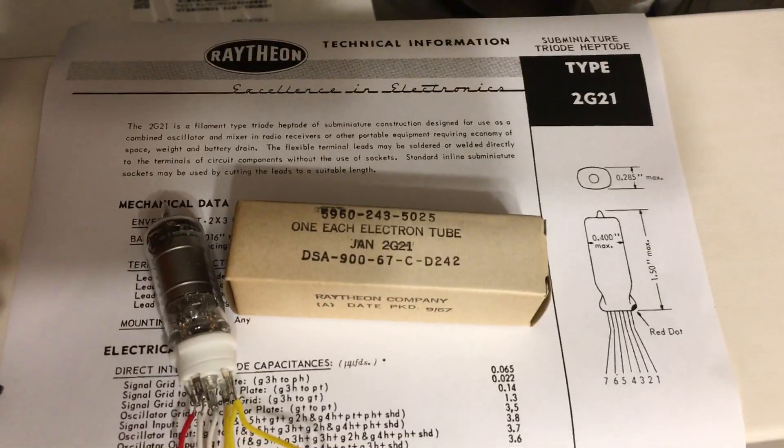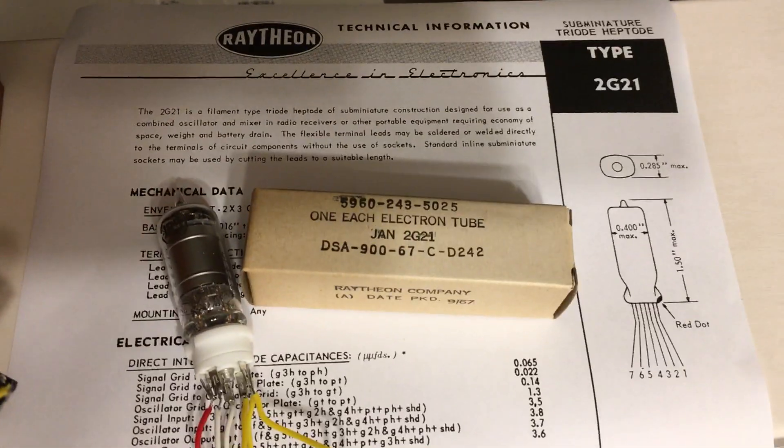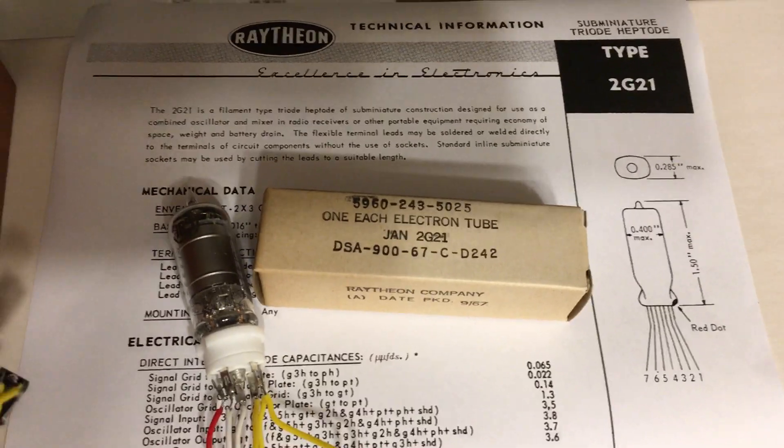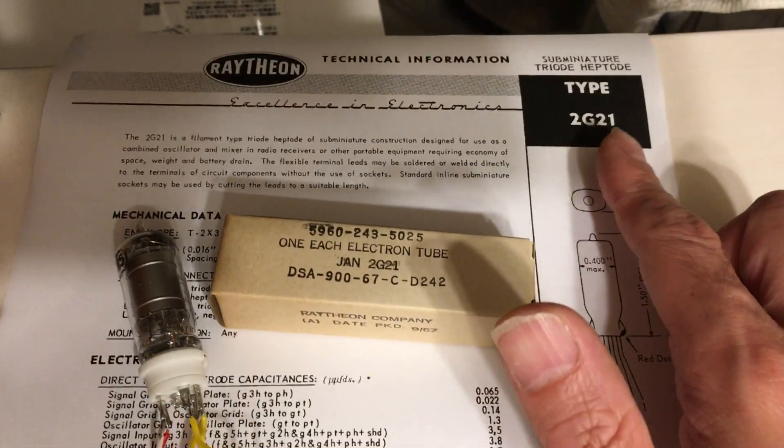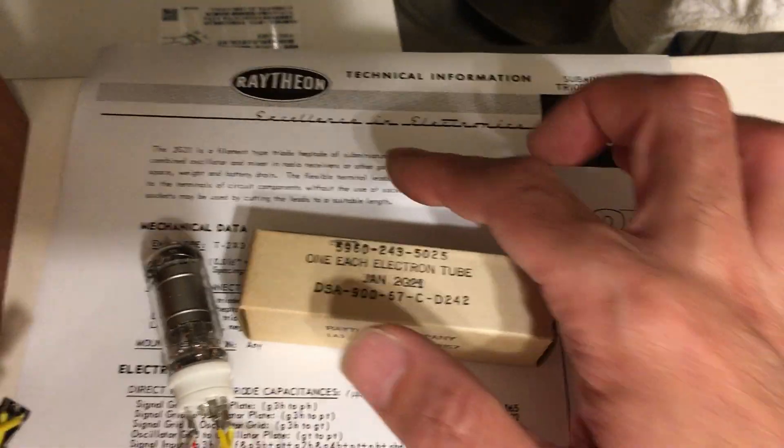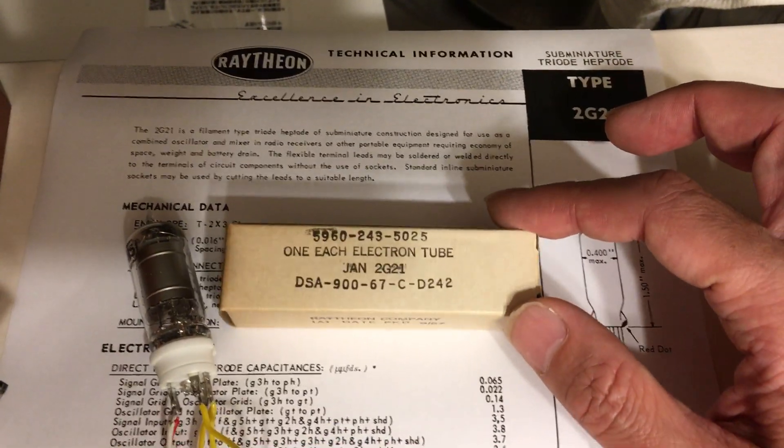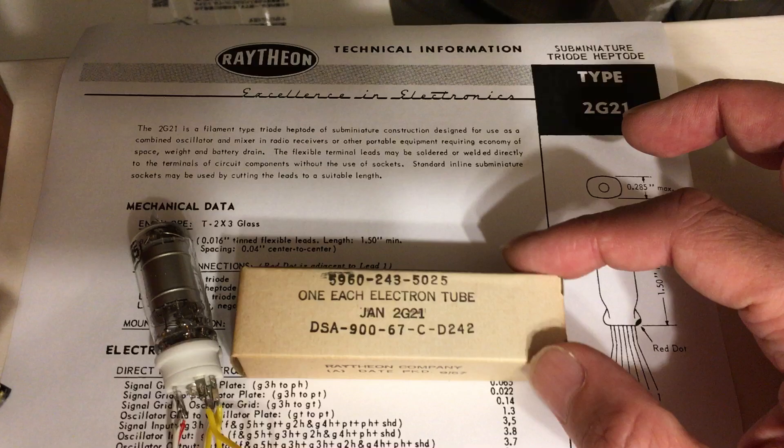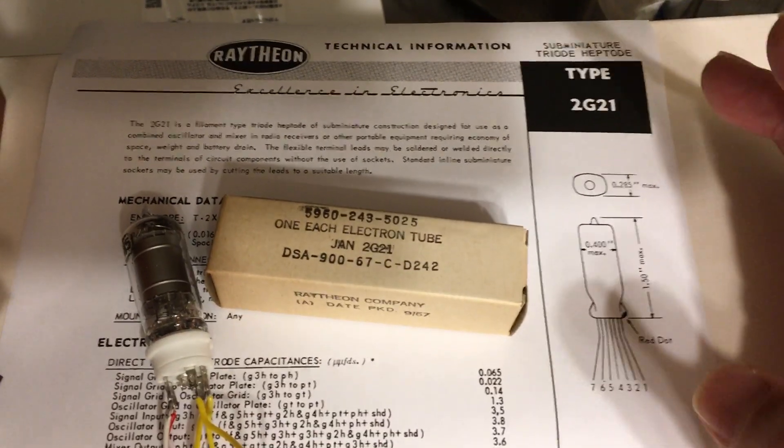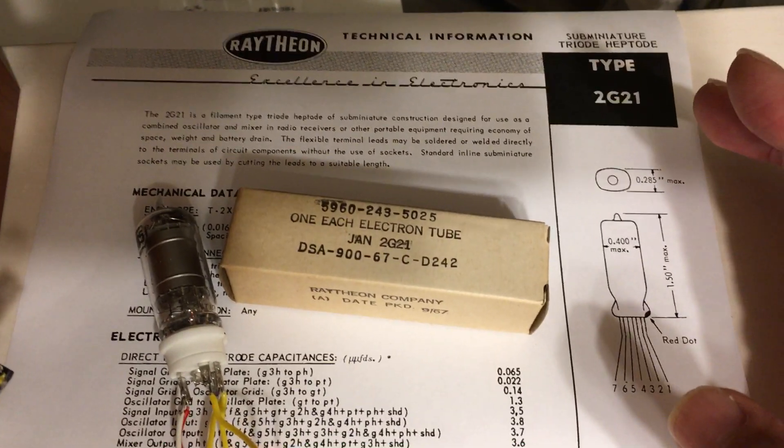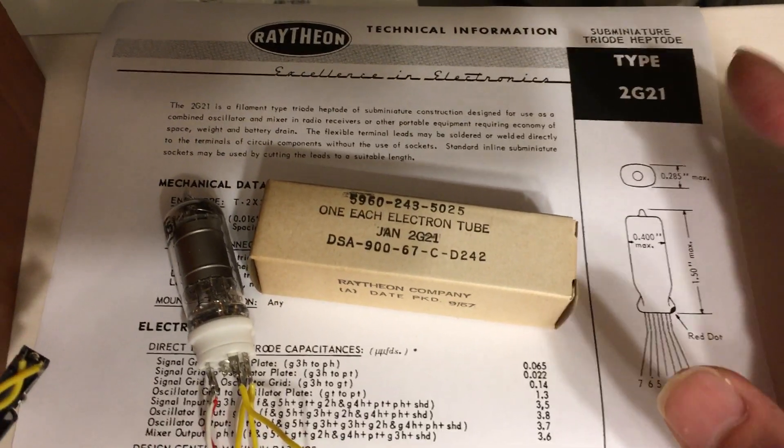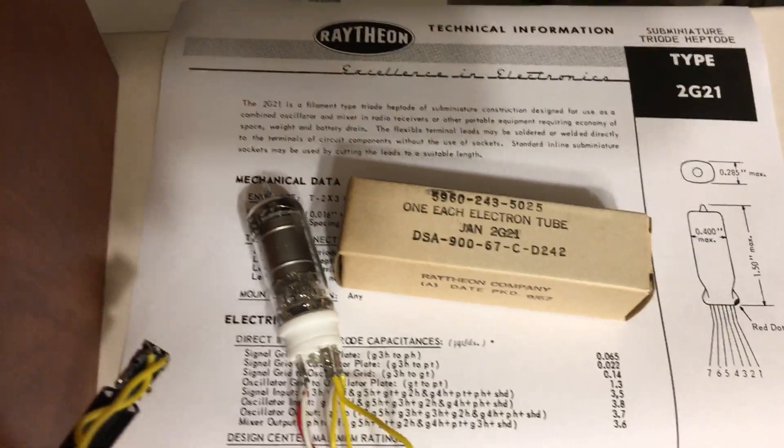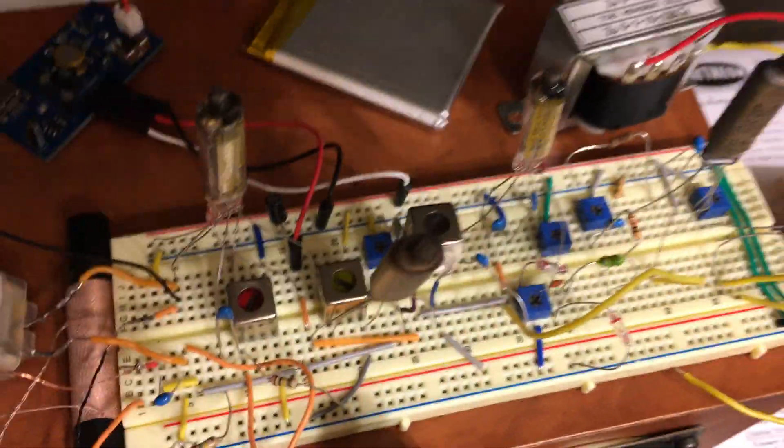Hello, so here is a very quick video showing that the HEPTOD-1R5 is exchanged with the 2G-21. It's a Laceon sub-miniature tube which is also a HEPTOD, and it can work for the oscillator and the frequency mixer, which can work from the receiving frequency to the intermediate frequency. Here is the circuit.